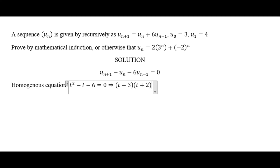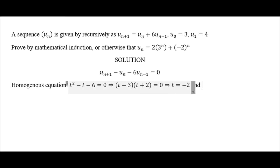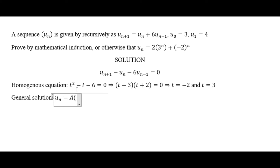From the factored equation we get two values: t = -2 and t = 3. Since this equation is homogeneous, there is no particular integral. Our general solution is therefore u(n) = A·3ⁿ + B·(-2)ⁿ, where A and B are constants.